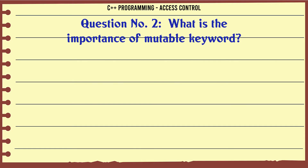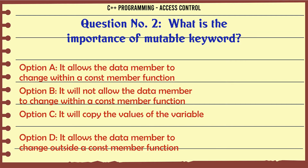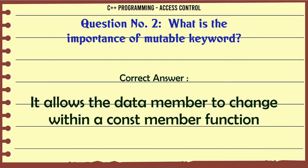What is the importance of the mutable keyword? A. It allows the data member to change within a const member function. B. It will not allow the data member to change within a const member function. C. It will copy the values of the variable. D. It allows the data member to change outside a const member function. The correct answer is: It allows the data member to change within a const member function.